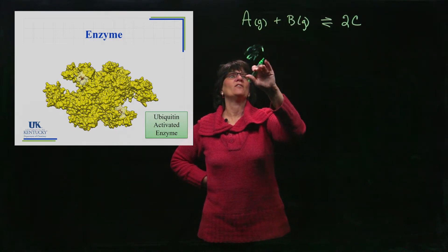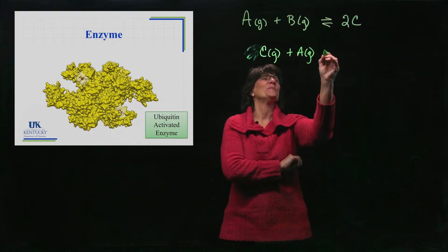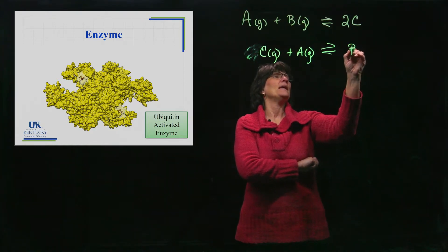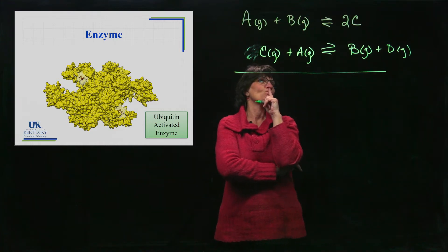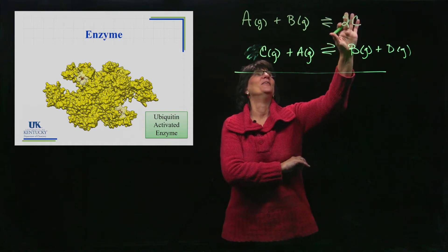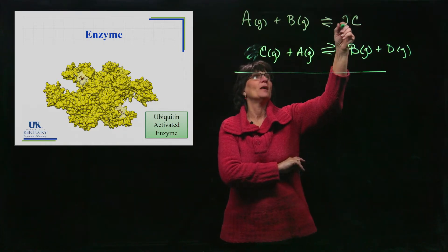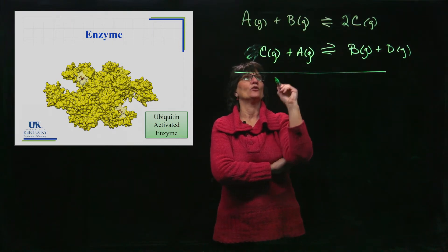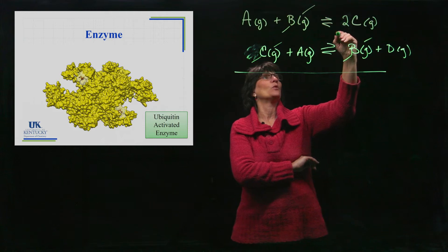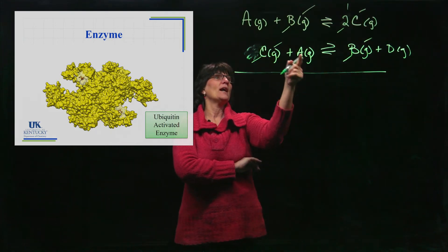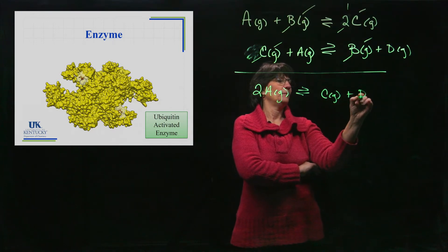Let's take one of those C's and have it bump into another A, and that is going to make B plus D. Now let's look at what can be cancelled: there is a B on this side that could cancel with the B on this side, and one of the C's can cancel with one of the C's and leave one behind. What you end up with is 2A going to C plus D.